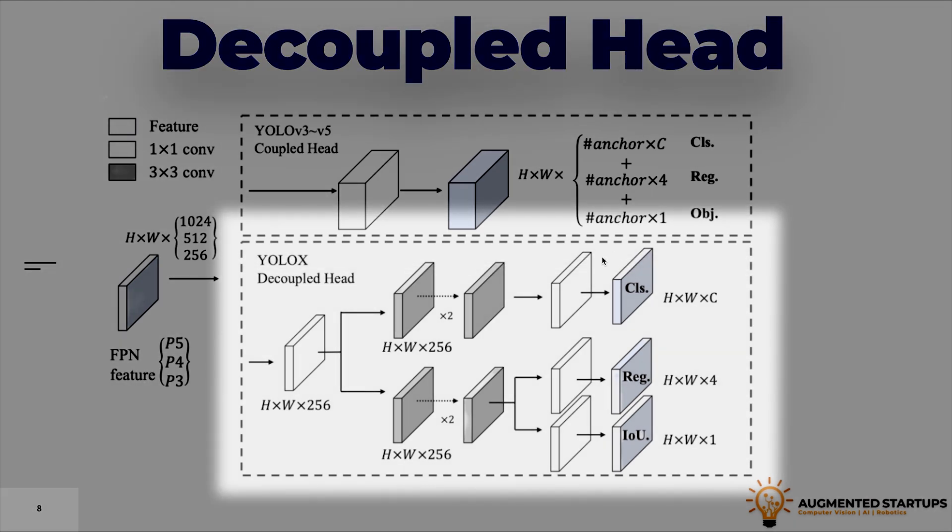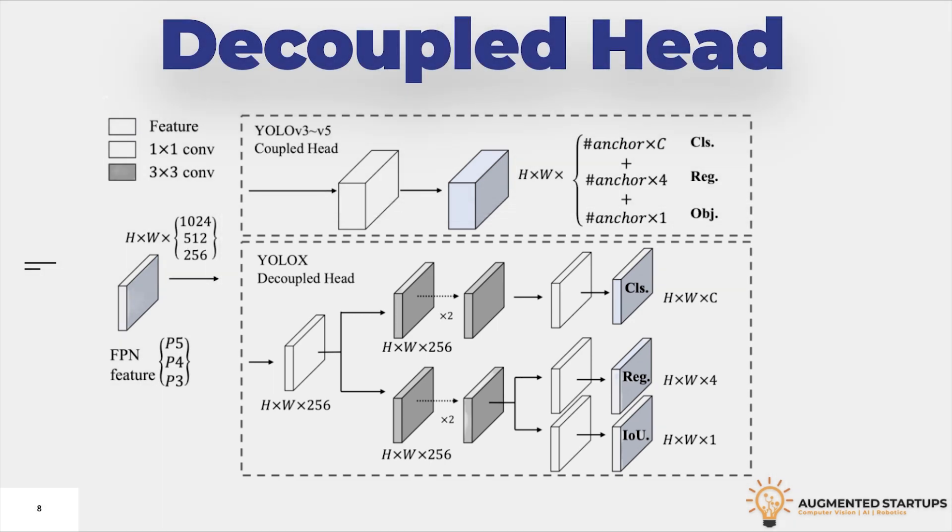As you can see in the second part of the image, they are using a distributed pipeline for localization and classification. They noticed that replacing the YOLO head with the decoupled head significantly improves the convergence speed. And this becomes essential for an end-to-end NMS-free model.